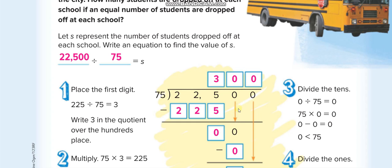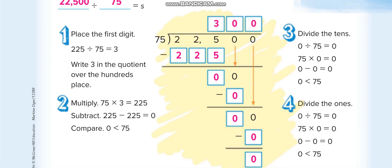Then we bring the next 0 down. 75 times 0 is equal to 0, and 0 minus 0 is 0. Then we bring the last 0 down. So 75 times 0 is 0, and 0 minus 0 is 0. So the remainder is 0 and the quotient is 300.